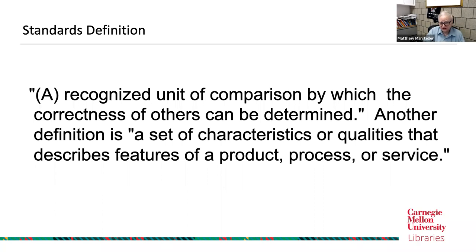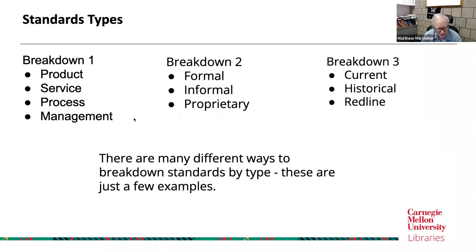Certain things like safety can be a concern, or tolerances — a particular product has to be built in a certain way to make sure it's safe. Examples are a better way to define a standard. Standards can be broken down into different types in many ways. It could be by the type of standard — whether it is a product, service, process, or management standard.